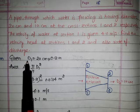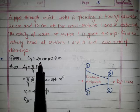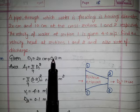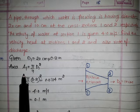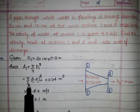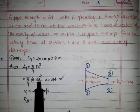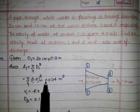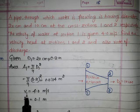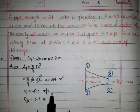First, d1 = 20 centimeter = 0.2 meter, and the area at section 1, a1 = π/4 × d1² = π/4 × (0.2)² = 0.0314 meter square. The velocity at section 1, v1, is given as 4 meter per second.